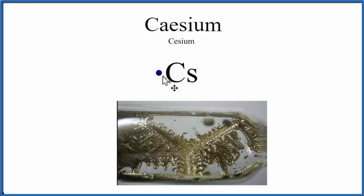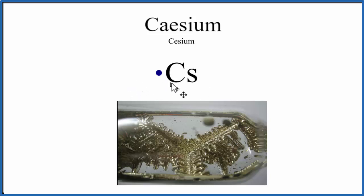Do note that cesium will lose this one valence electron — it'll transfer it when it bonds with another element. When it does that, it loses that electron, which is negative, and it becomes a positive ion called a cation. This is Dr. B with the Lewis structure for cesium, and thanks for watching.